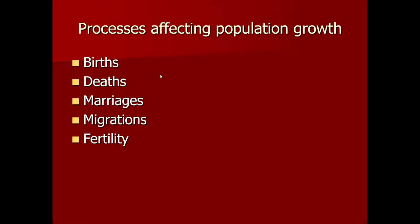What are the processes which can affect population growth? Multiple vital events affect the growth of population. Number one: births — if the number of births is increasing, the population is definitely growing. Number two: deaths — if deaths are reduced through adequate healthcare services, the population grows. Number three: marriages — registered marriages reflect how the population will increase in coming years. Number four: migrations — both in-migrations and out-migrations show changes in population. In-migration increases the population and out-migration decreases it.